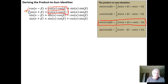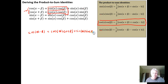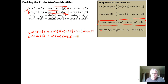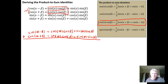We grab the identity cosine(α−β) = cosine α cosine β + sine α sine β, and the sum identity cosine(α+β) = cosine α cosine β − sine α sine β. If we add these two identities together, the sine α sine β and the minus sine α sine β cancel to zero, and the product of two sines is eliminated, leaving us with just the product of two cosines.